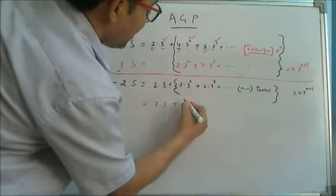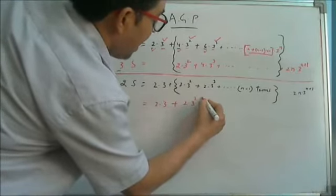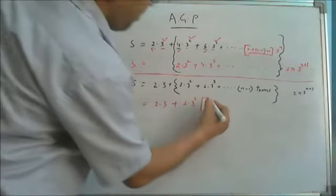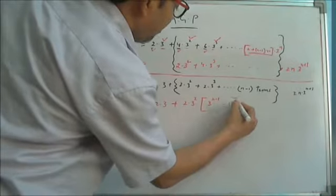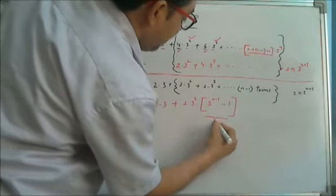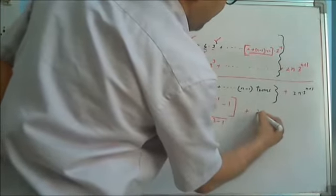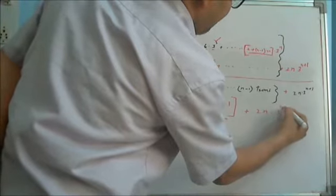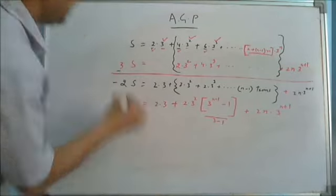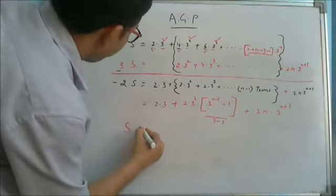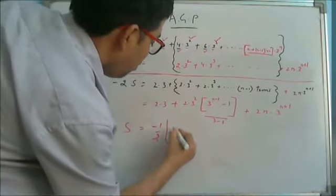By following this process, we are getting the result in GP, and we can find the sum of the GP very easily. The first term is left as it is. It is a GP, so sum of GP is a, that is 2×3², times (rⁿ − 1) where r is 3, and the number of terms is n−1, divided by r−1, that is 3−1 = 2. Plus the last term 2n×3ⁿ⁺¹.